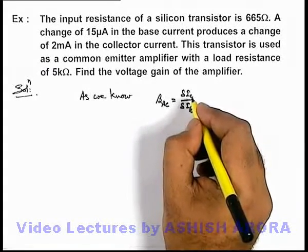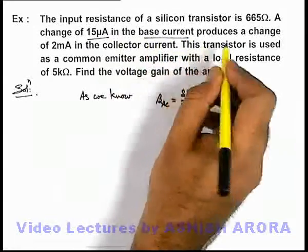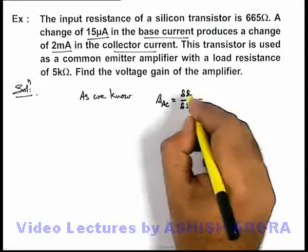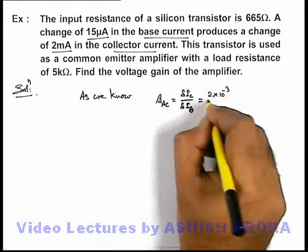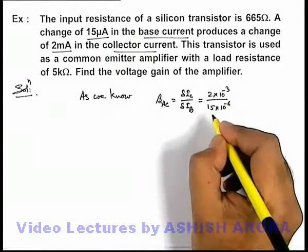Here we are already given that a change of 15 microampere in the base current produces a change of 2 milliampere in the collector current. So we substitute the values: for collector current variation it is 2 into 10 to power minus 3, for base current variation it is 15 into 10 to power minus 6.